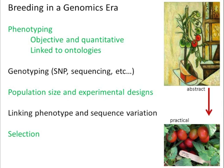The genotyping I'll cover in terms of SNPs and sequencing. This is an area where technology is changing. We've talked about the infinium arrays that have been developed, but it's getting to the point where genotyping by sequencing is almost going to be more cost effective. What I want to emphasize is that as breeders, what we need to be thinking about is the population size and experimental designs that we use. The next step is linking phenotype to sequence variation and then finally using this information for selection.